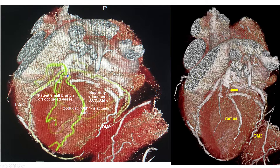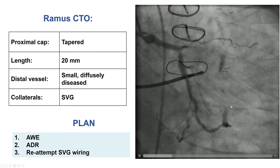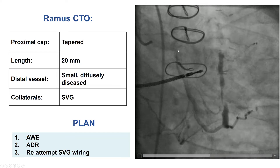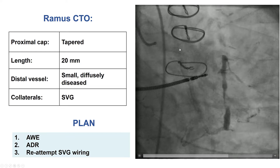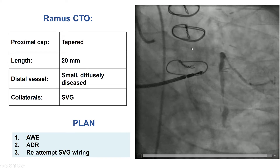Blood flows essentially from the left main down the circumflex, up the saphenous vein graft, and into the RAMUS. Therefore, our plan has changed, and the plan is to attempt the RAMUS CTO.